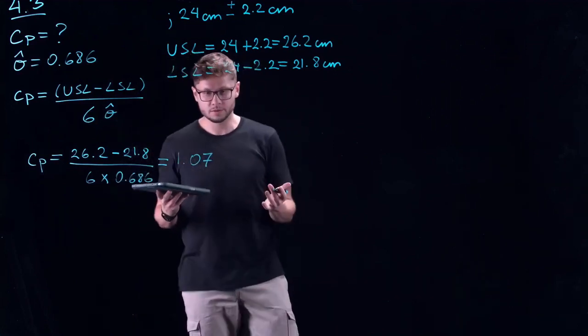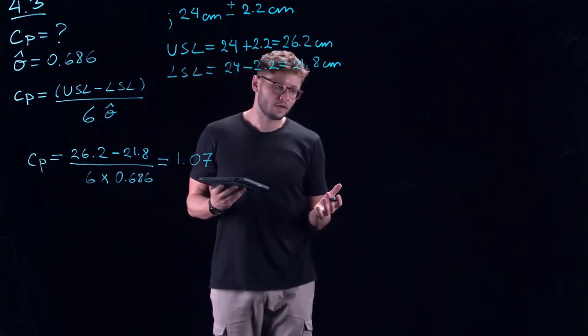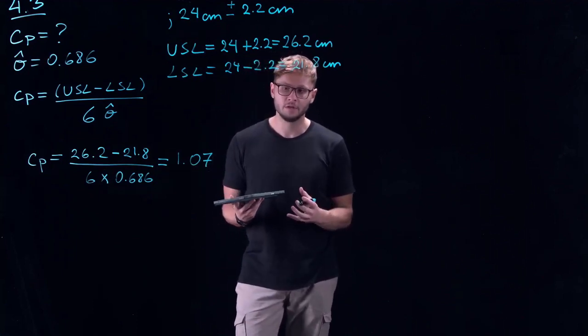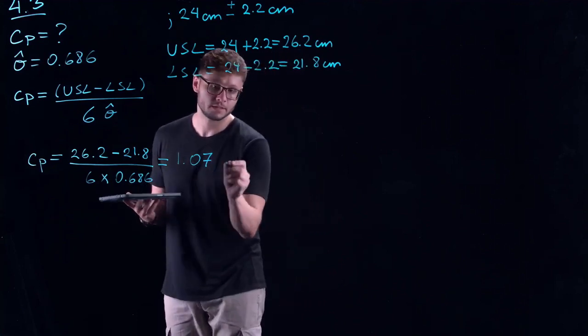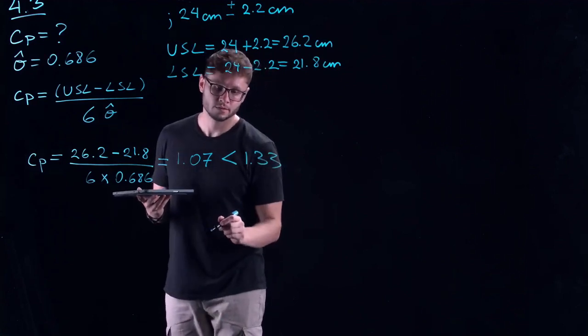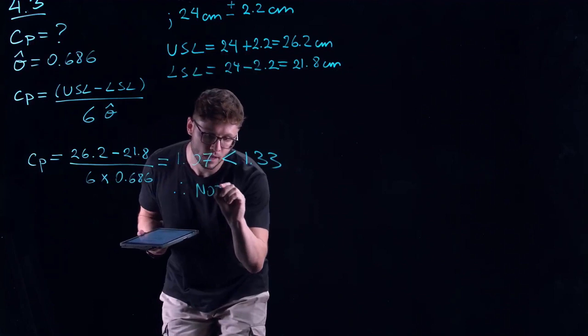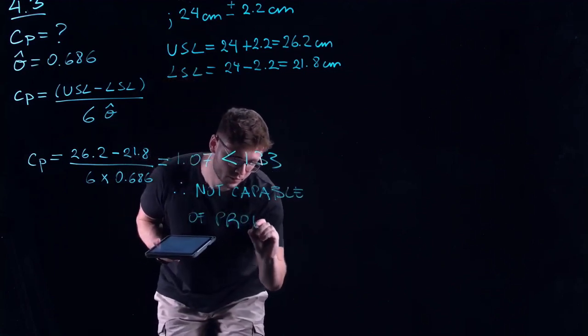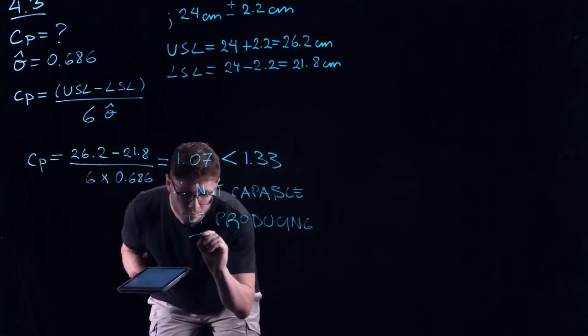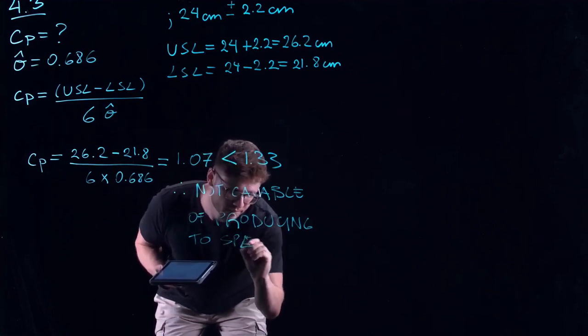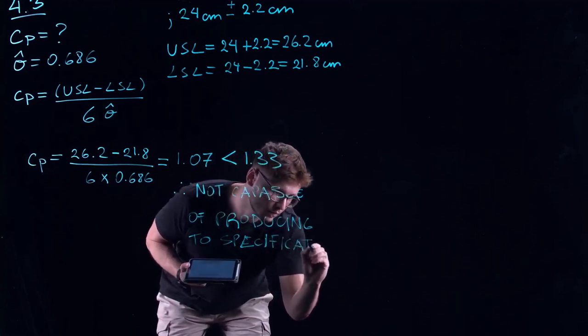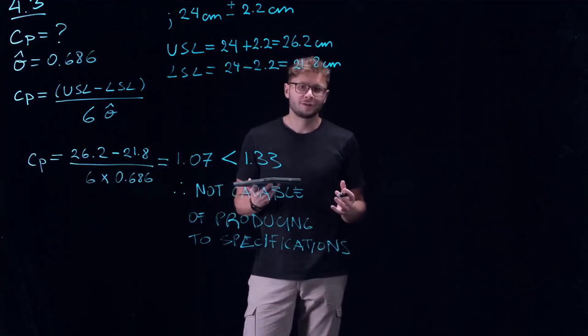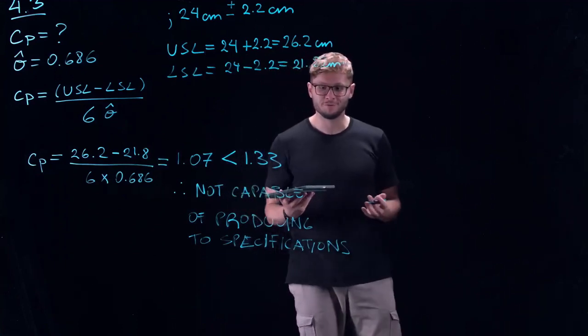And what does that mean? In industry, a process which has a capability ratio below 1.33 is considered to not be capable of producing the parts to specifications. As we see here, this is below 1.33, therefore not capable. The last part, as to how to interpret these results, is just a little extra knowledge if you're interested, which eventually you will have to be interested if you do choose to pursue a career in industrial engineering.